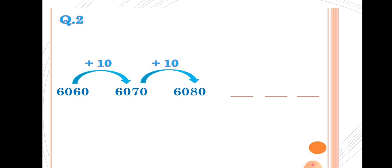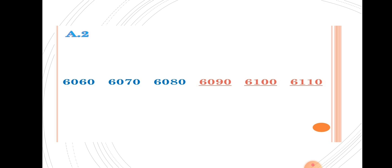Here, the last number is 6080. Add the difference: 6080 plus 10 equals 6090. Then 6090 plus 10 equals 6100. Then 6100 plus 10 equals 6110.